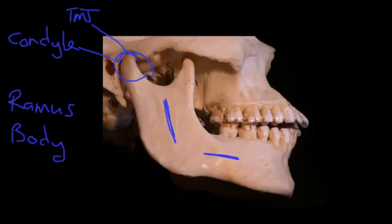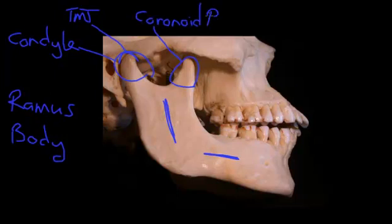The other part that sticks out of the top of the ramus is called the coronoid process. The coronoid process is where the large temporalis muscle attaches before it sneaks and hides behind this little area, which is not part of the mandible, called the zygomatic arch, or your cheekbone.